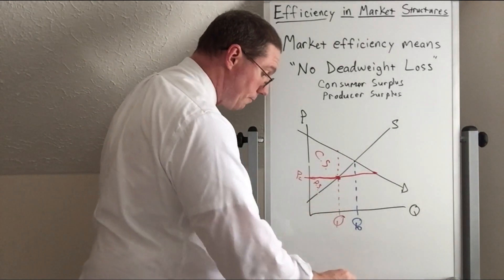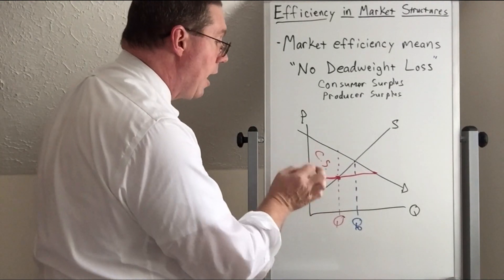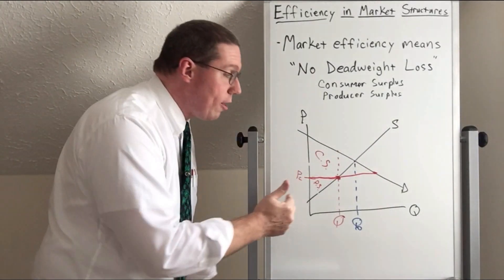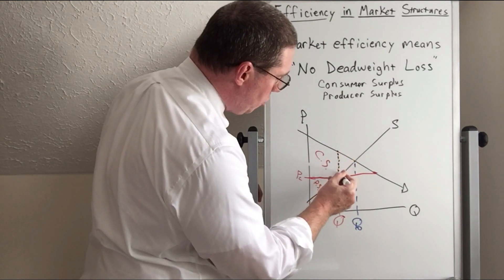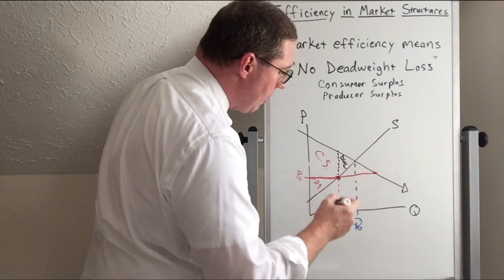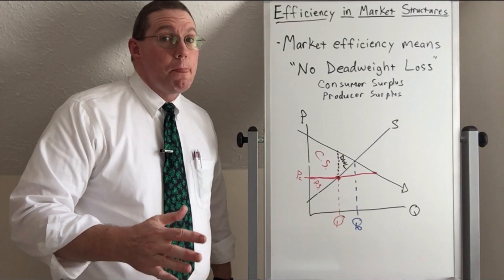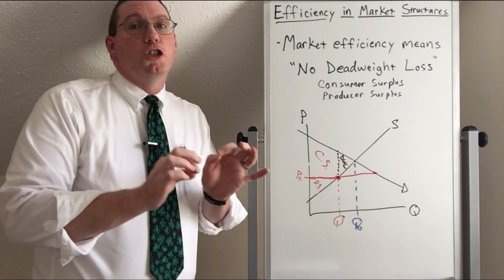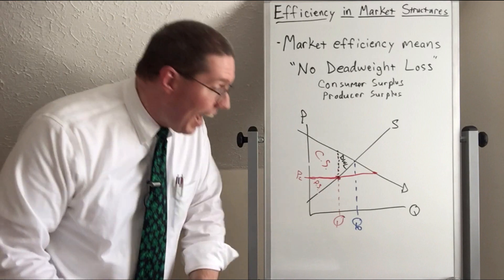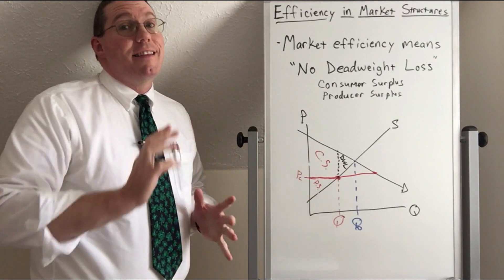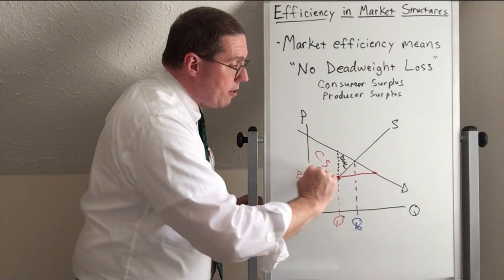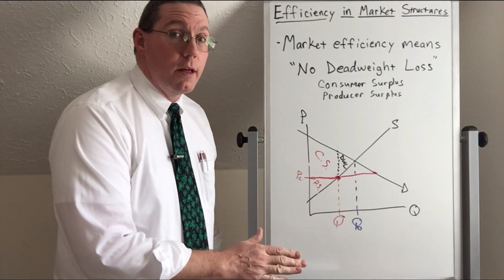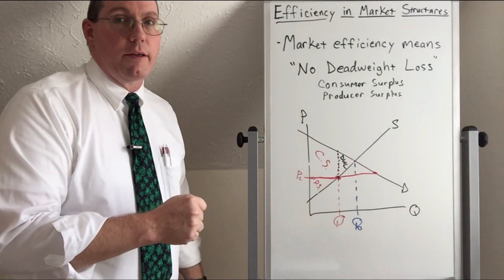The government steps in and tells producers they're not allowed to charge a price higher than the ceiling. But now the government is introducing inefficiency in its effort to protect consumers. That's dangerous. Governments should be careful about instituting price ceilings. What they really should do is encourage the price to move as close to equilibrium as possible.